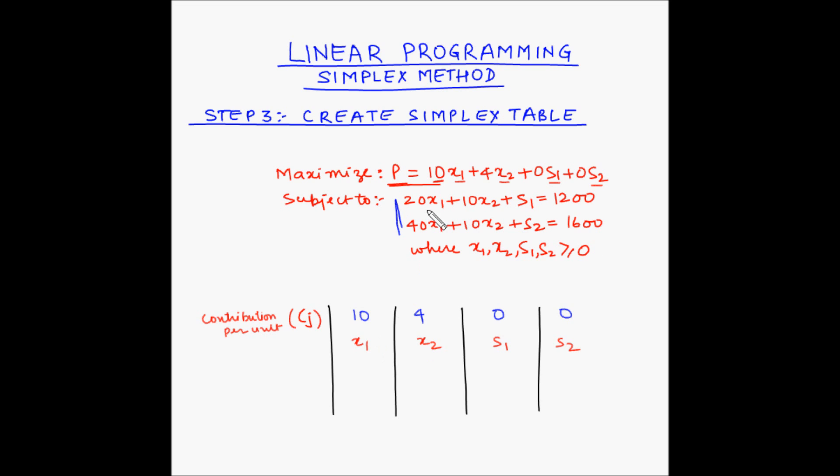So the coefficient for x1 for the first constraint is 20. The coefficient for x2 in the first constraint is 10. The coefficient for s1 in the first constraint is 1. And this constraint does not have s2, which means the coefficient for s2 is 0.